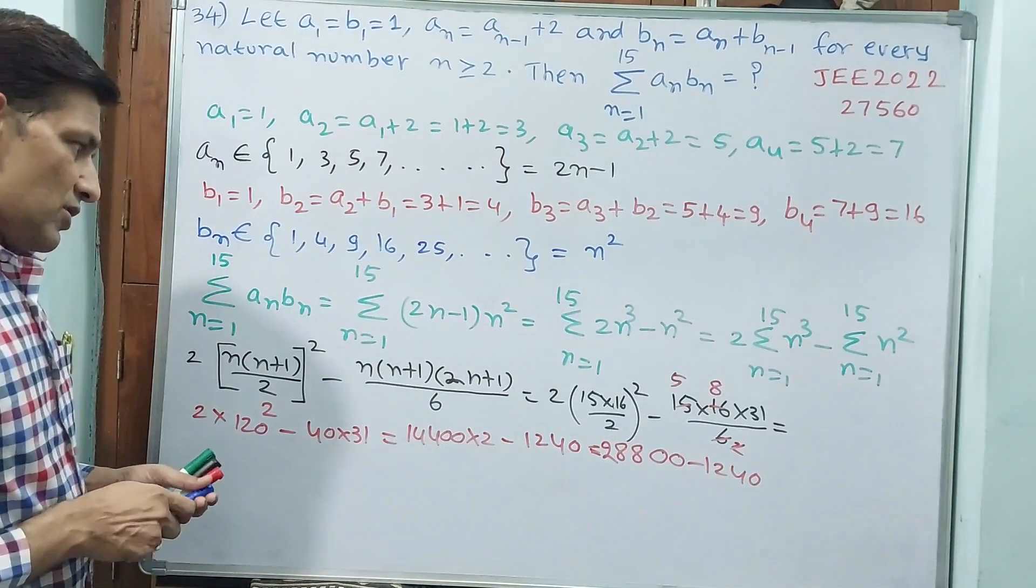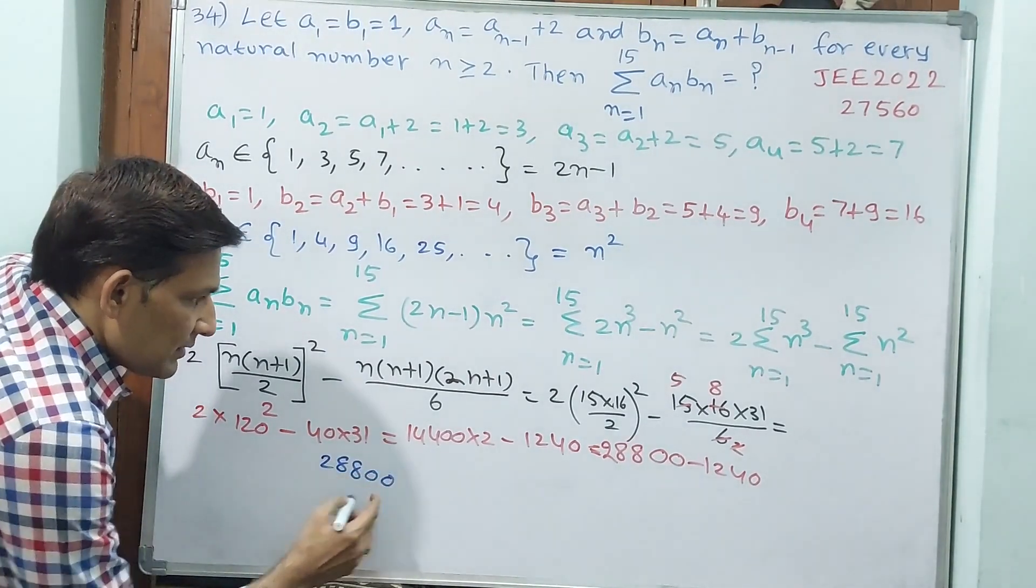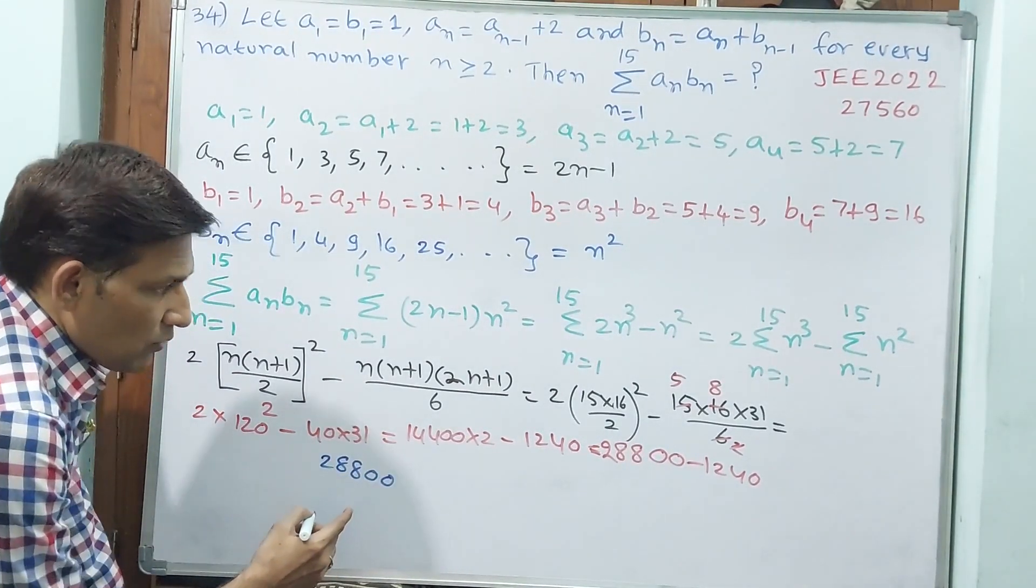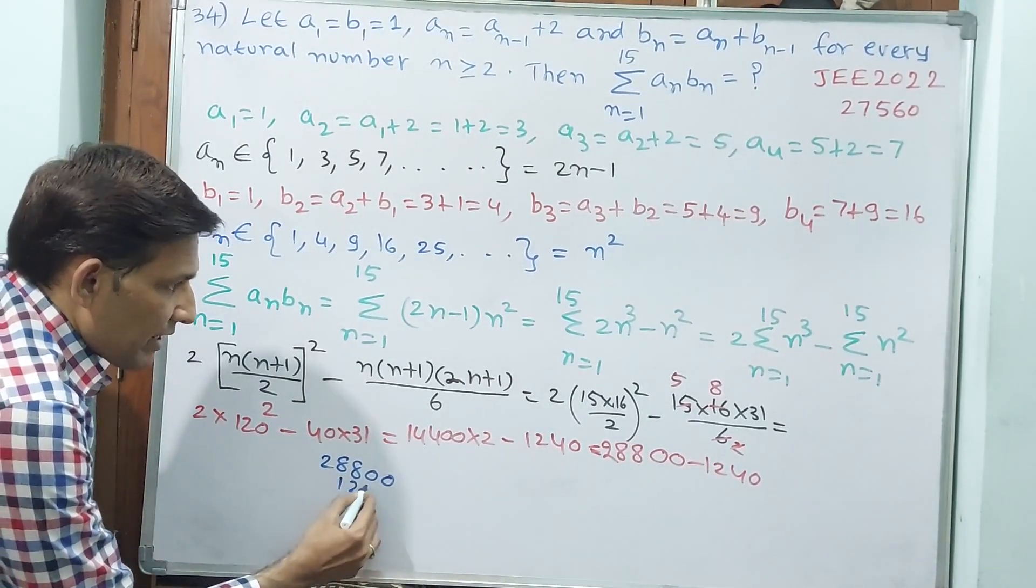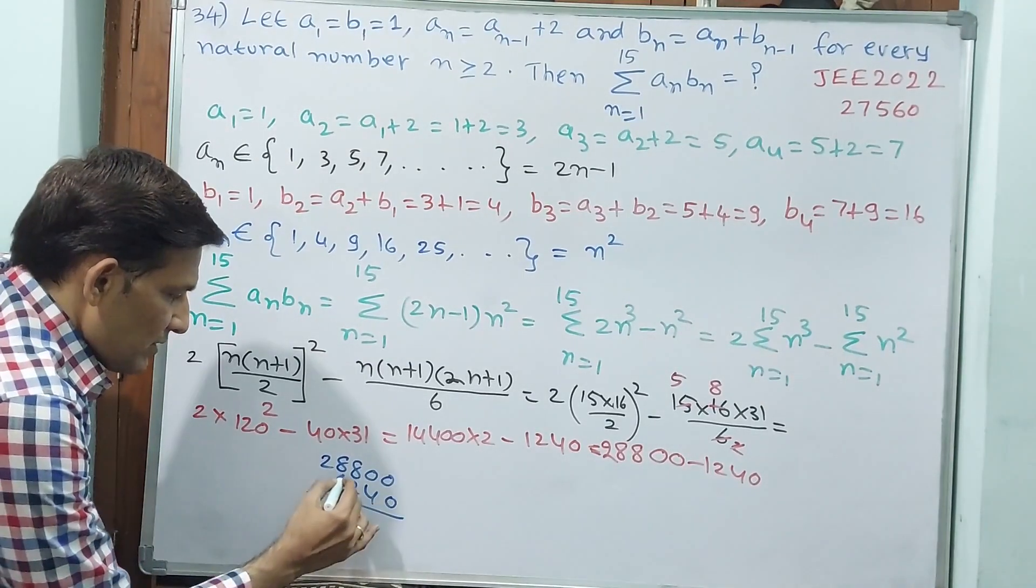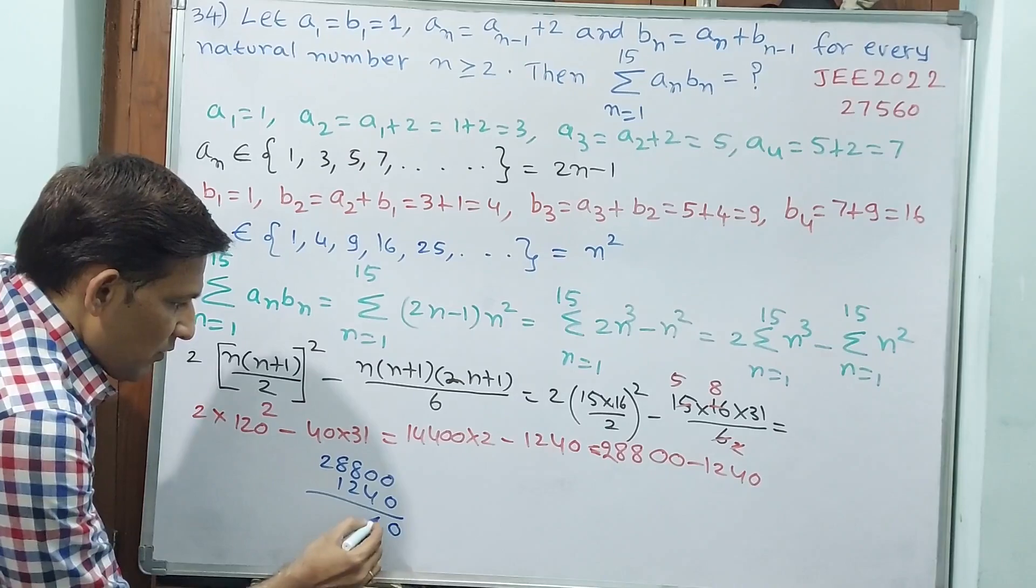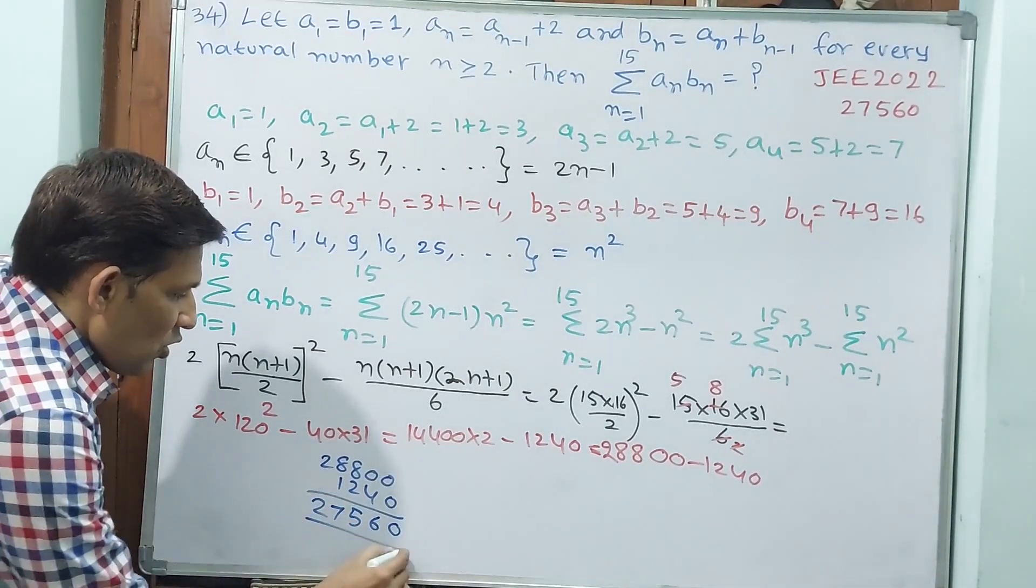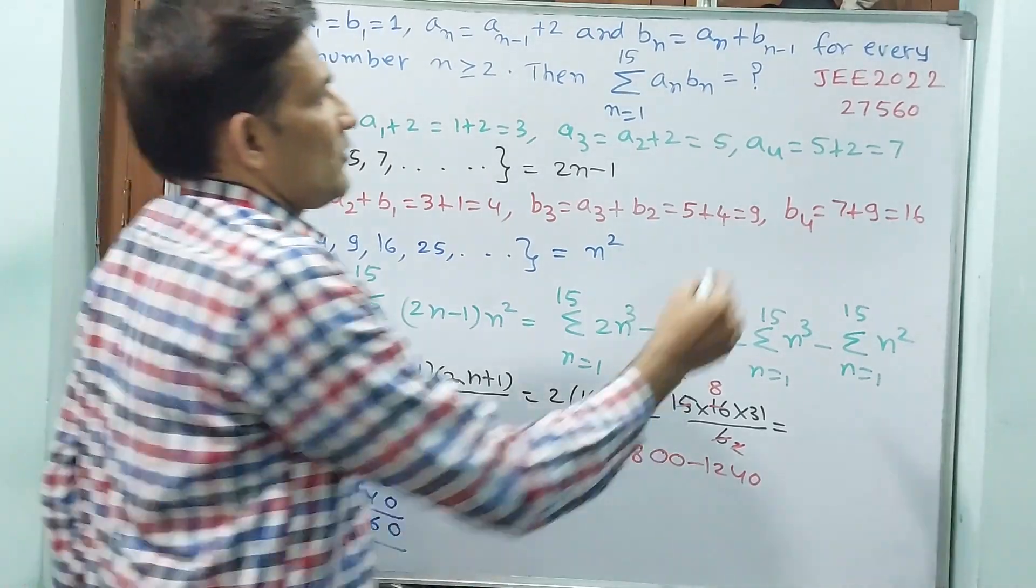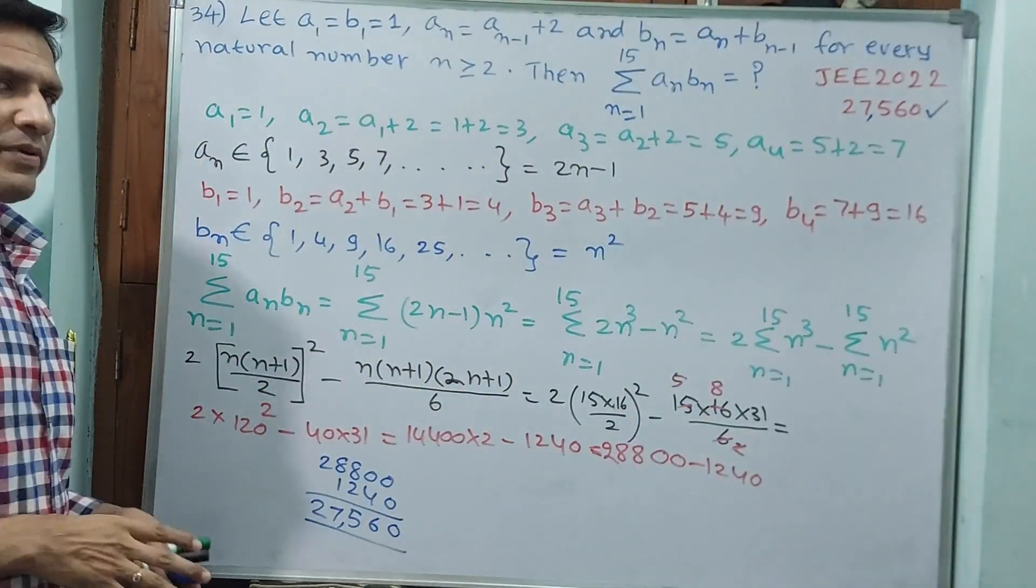Now just you have to subtract from 28,800. 28,800 minus 1240. See, 0, 10 minus 4 is 6, 7 minus 2 is 5, 8 minus 1 is 7, 2. 27,560. 27,560 will be your answer. Let us go for next question. Thank you.